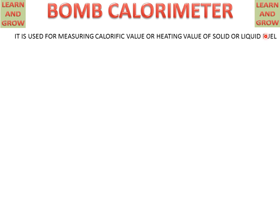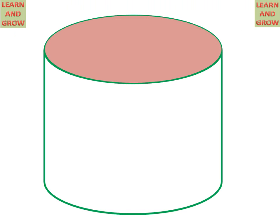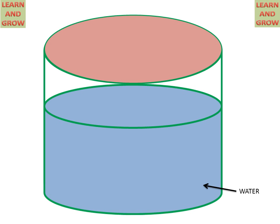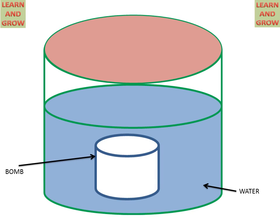Firstly, we will discuss the parts of the bomb calorimeter. We have a container in which water is filled, and there is a small container in the water. This is called a bomb.